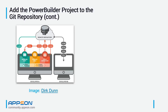Locking becomes an issue because repositories are all peers — there's no one master repository that can say a user has an object locked. Most Git implementations don't provide any locking capability. On the positive side, because your repository is local, you can do development disconnected from the remote repository — make changes, do commits — and when you're back on the network, do your push and pull to sync back up. This seems a little weird for people coming from the older MSSCCI approach, but there are advantages.